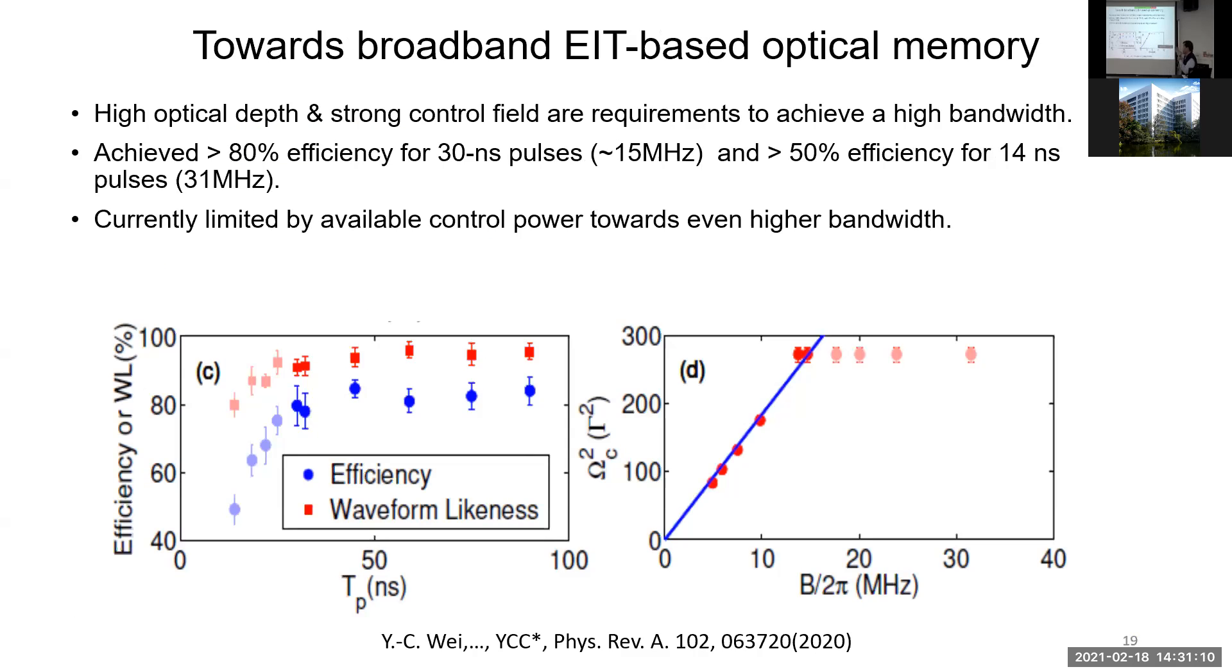Okay, so we can reach a very high efficiency. Recently we tried to push memory bandwidth to higher bandwidth. Previously we only had like two megahertz bandwidth. We conducted a theoretical and experimental study to study what are the requirements to reach high bandwidth. Eventually it's the same condition. You need to have very high optical depth and very strong control field to achieve high bandwidth. At this moment we can push our memory bandwidth to about 31 megahertz. Below 15 megahertz we can reach efficiency more than 80%. Above that bandwidth we are limited by our available control field. We need even higher power.